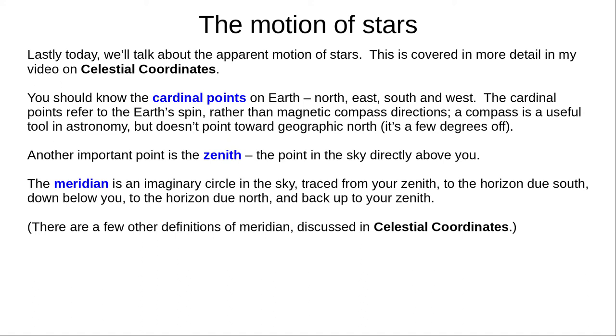You've heard of the cardinal points – north, east, south and west. In astronomy and navigation, these refer to the Earth's spin, which defines the geographic directions, rather than the Earth's magnetic field as shown on a compass, which is a few degrees off and varies over time. If you're using a compass, you have to adjust your measurements by a few degrees. You should also know the zenith, the point in the sky directly above you.